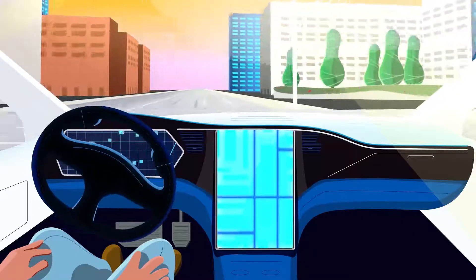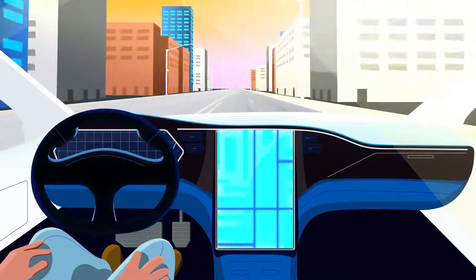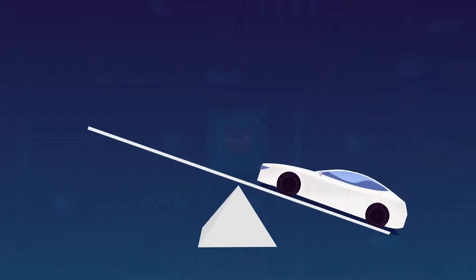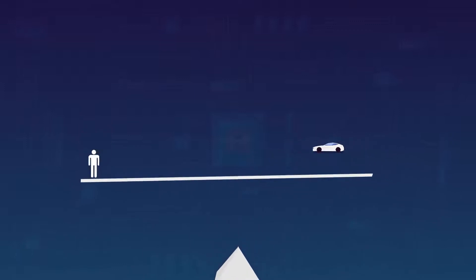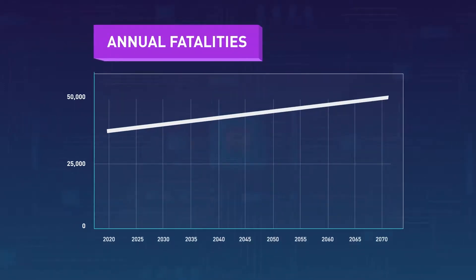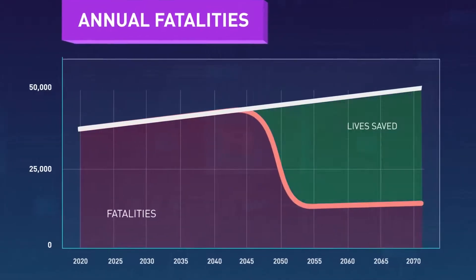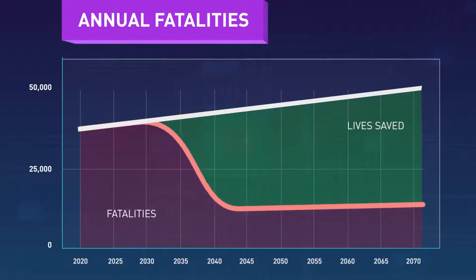But are we really ready to let go of the steering wheel? We have to ask ourselves, what puts us at greater risk? Imperfect machines? Or imperfect human beings? And if we don't want the perfect to be the enemy of the good, we must consider the critical factor of time.